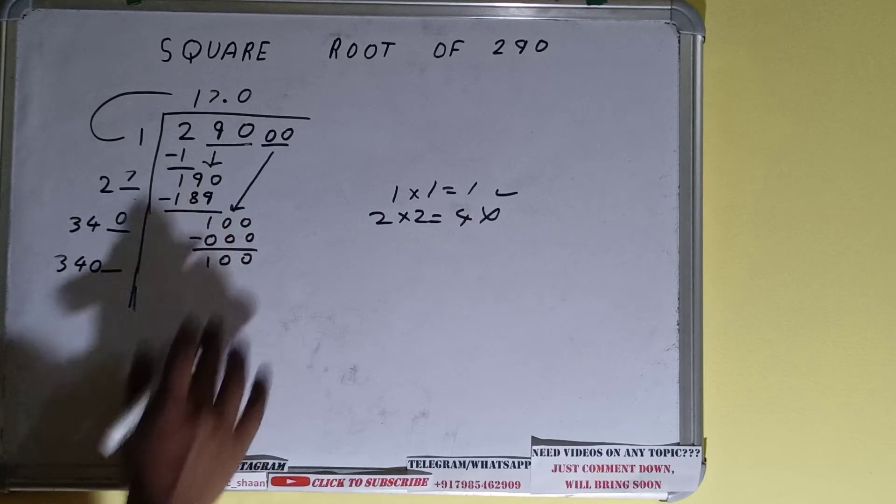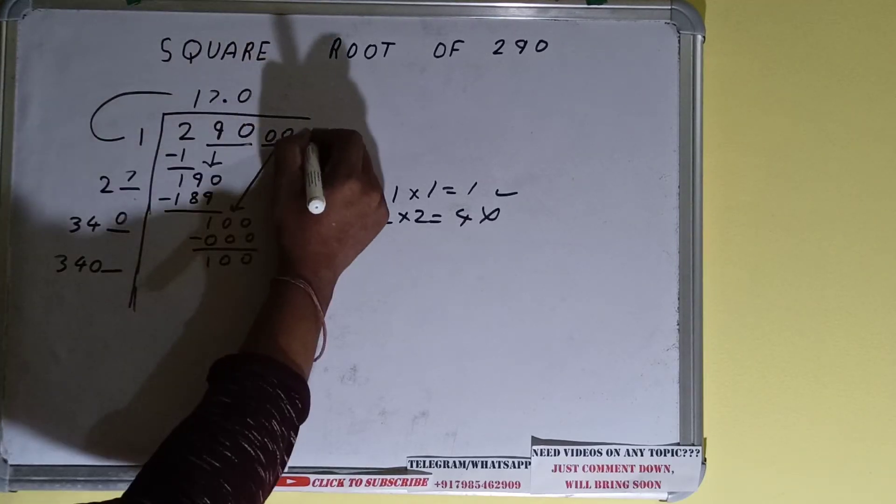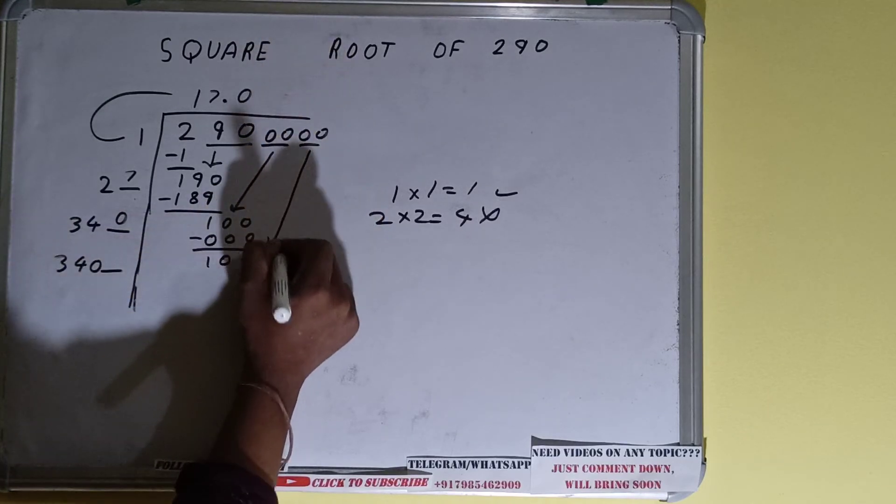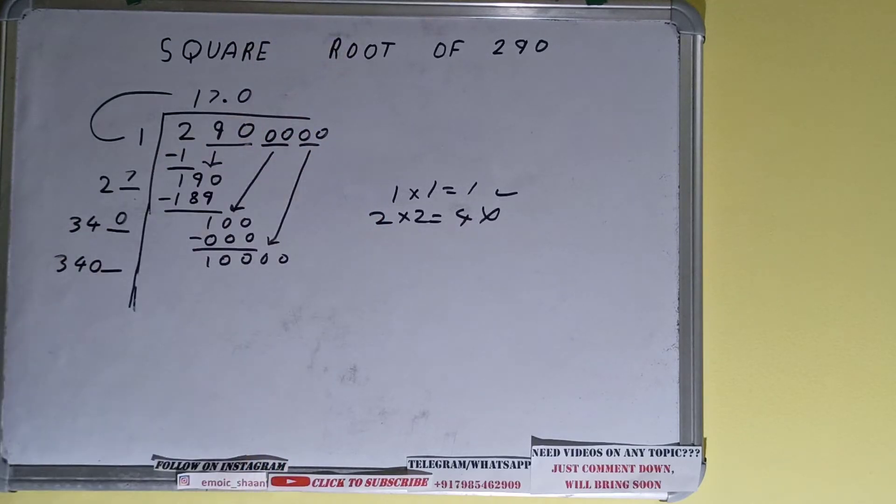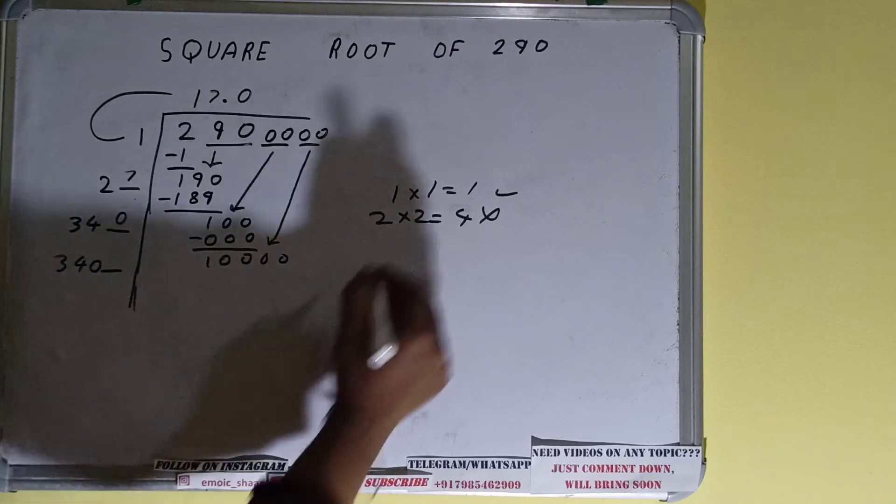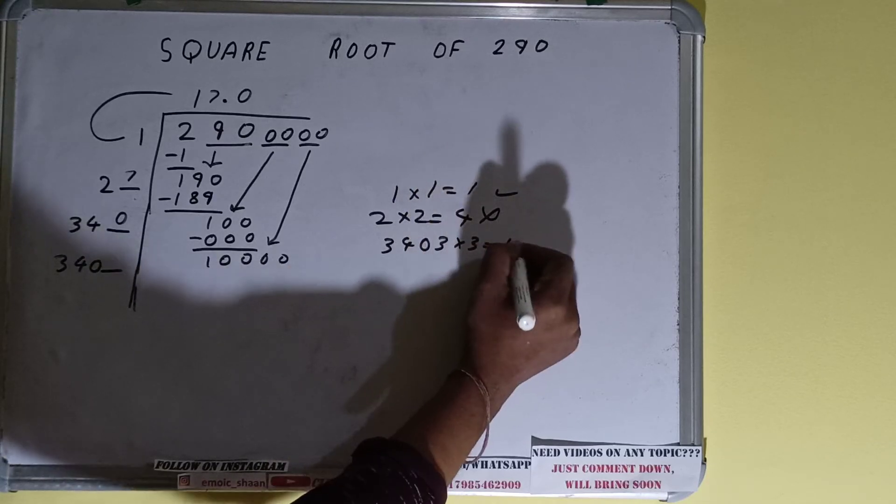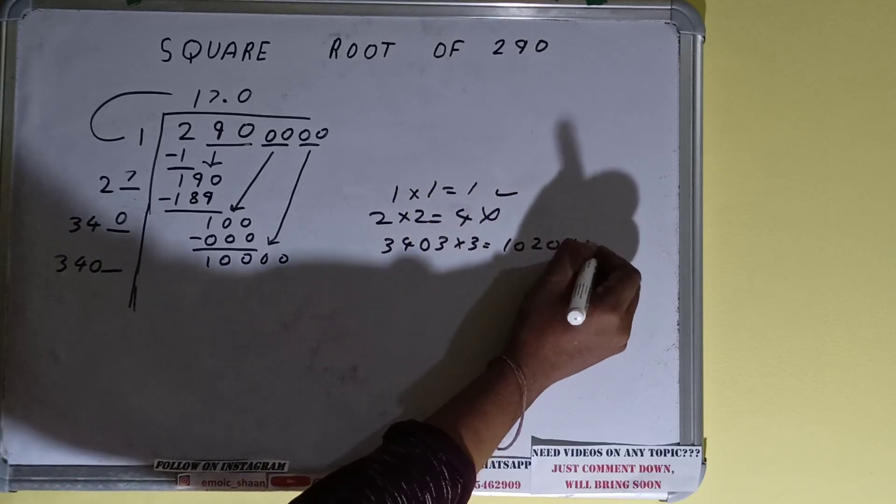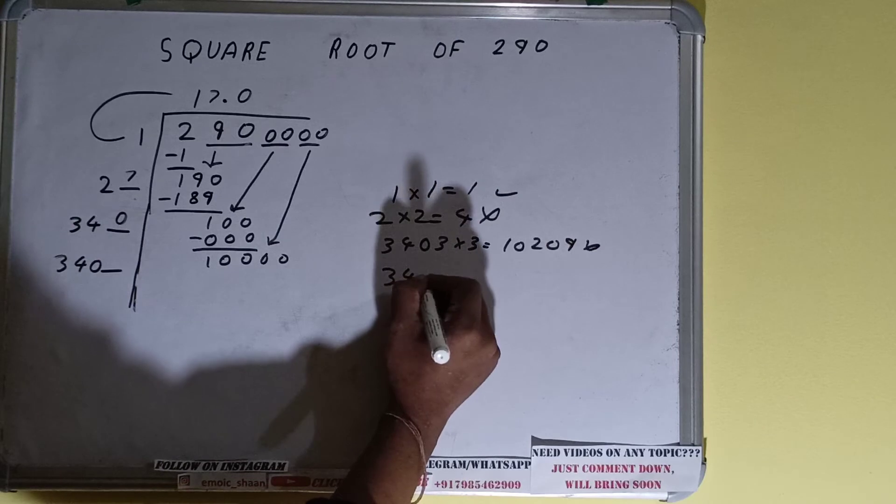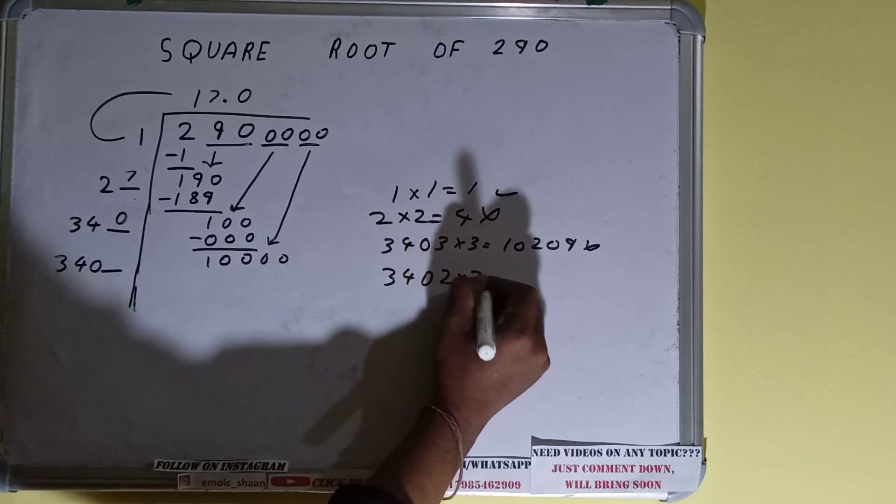Over here we need to make this number big, so bring one more pair of zeros and number will become 10,000. Now we can try three times. So 3403×3 is 10,209 which is slightly bigger, so we have to try two times. 3402×2 we can try.